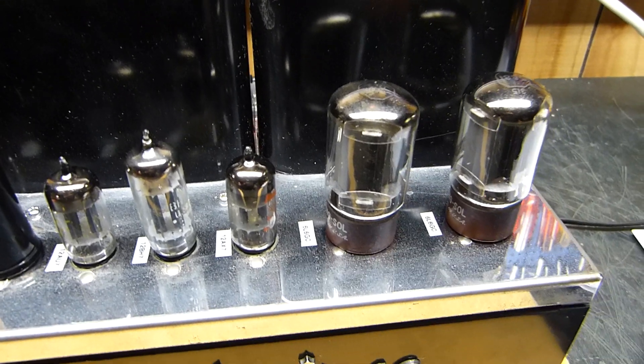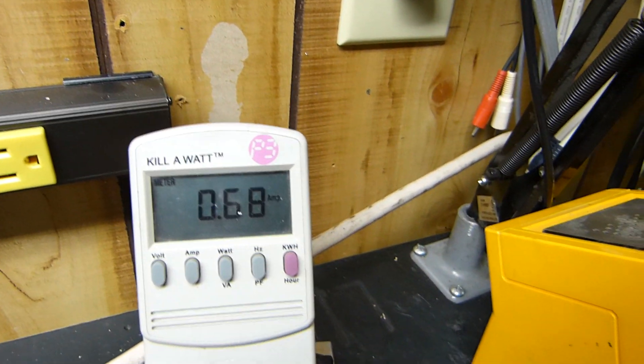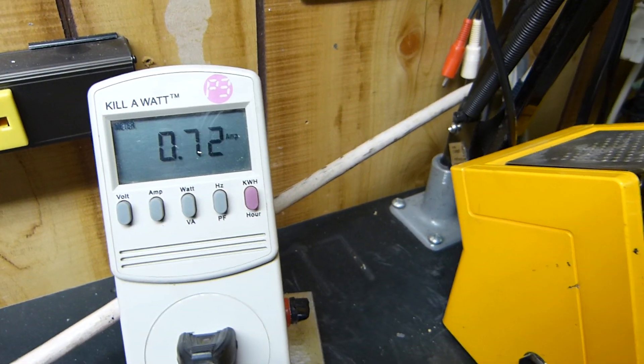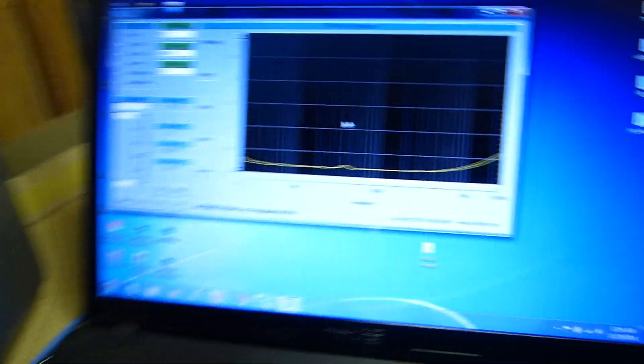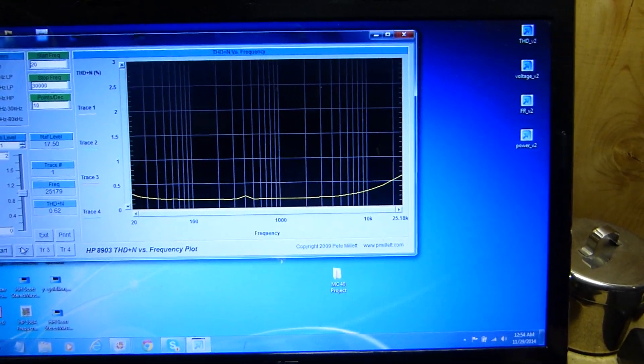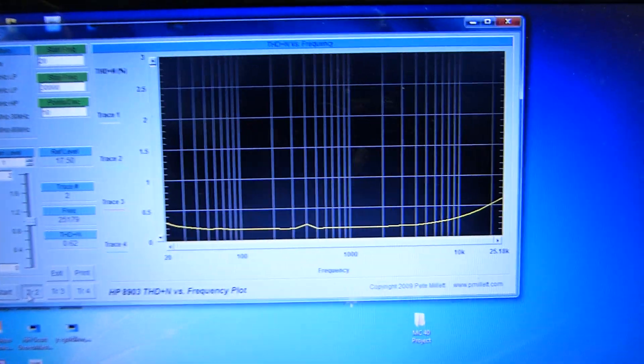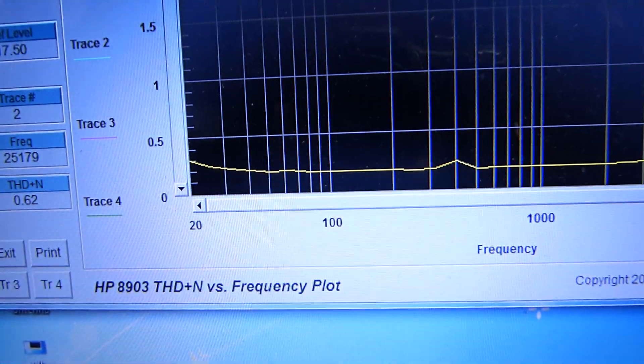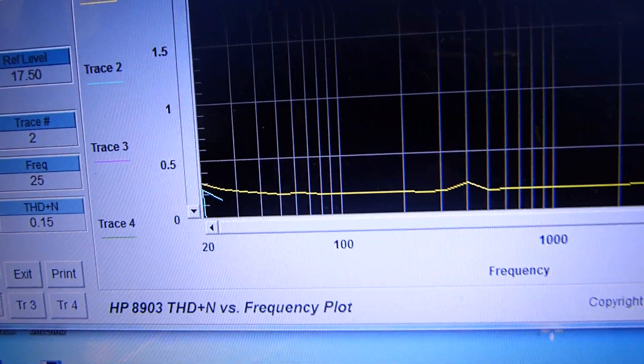That little nice Amperex 12AT7 warming up. All we gotta do is wiggle that one - that's line current. Turn that off, mostly because it causes electrical noise.